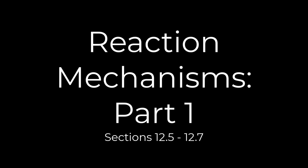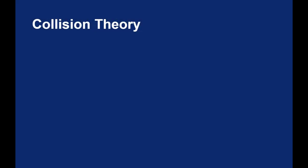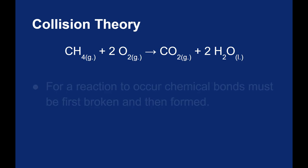We've spent the entire chapter measuring and calculating the rates of reactions, but we haven't really talked about why some reactions happen faster than others. Let's take a look at the combustion of methane as an example.